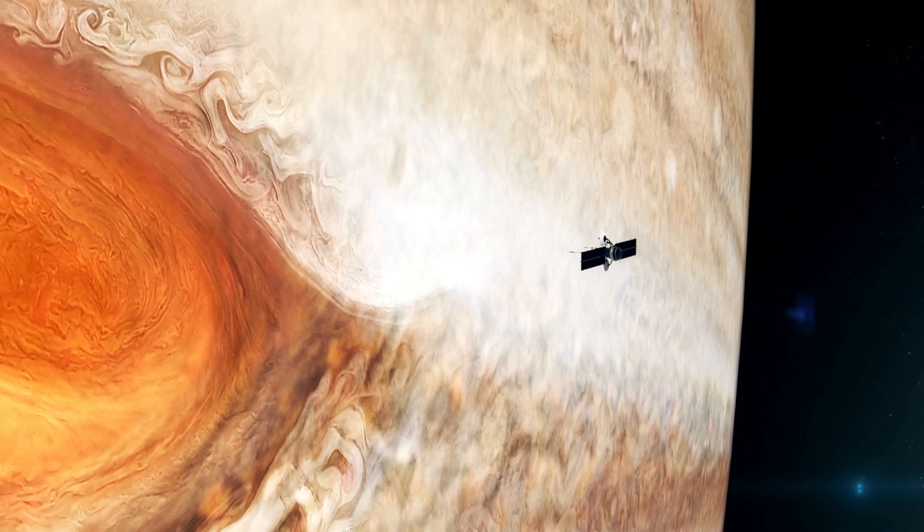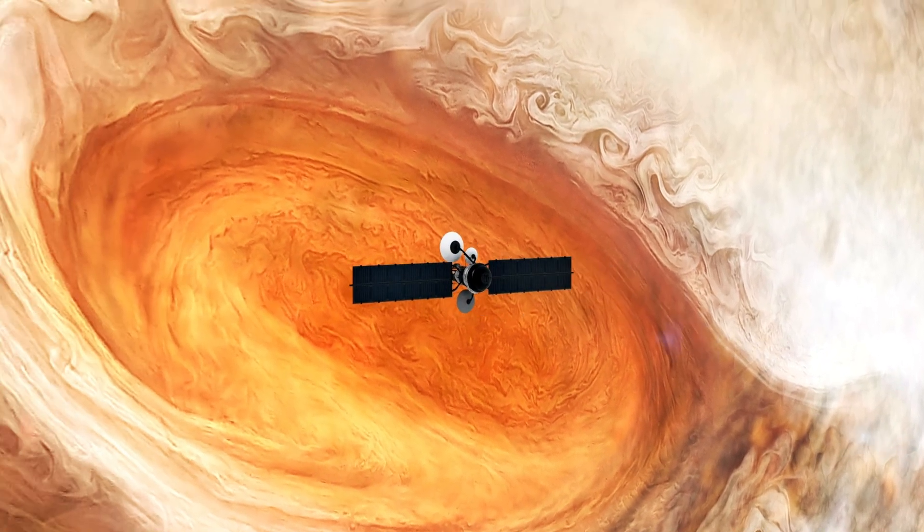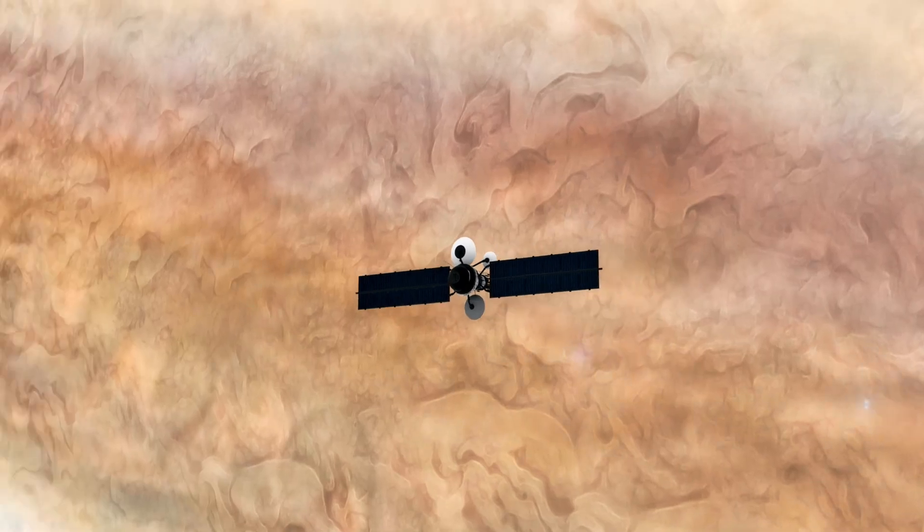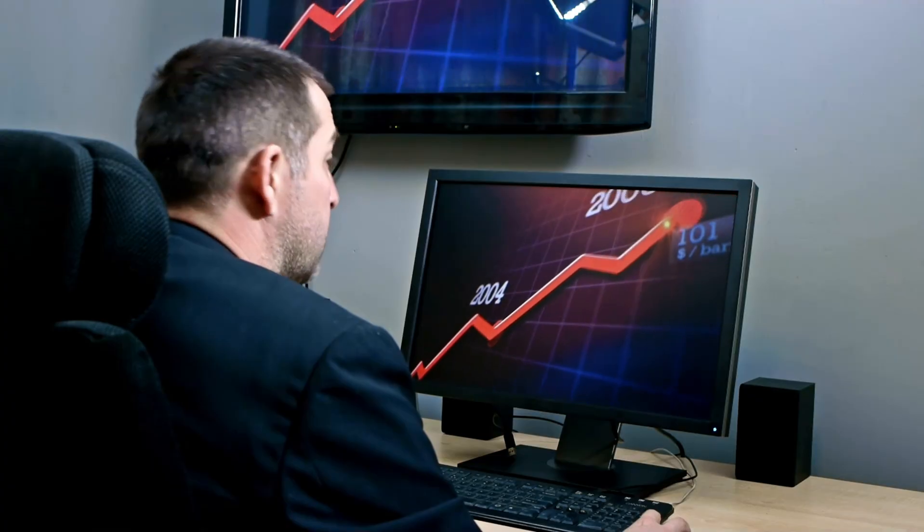Voyager turned its camera back towards Earth, capturing what basically amounts to Earth's first-ever selfie. The picture taken showed these pale blue dots.